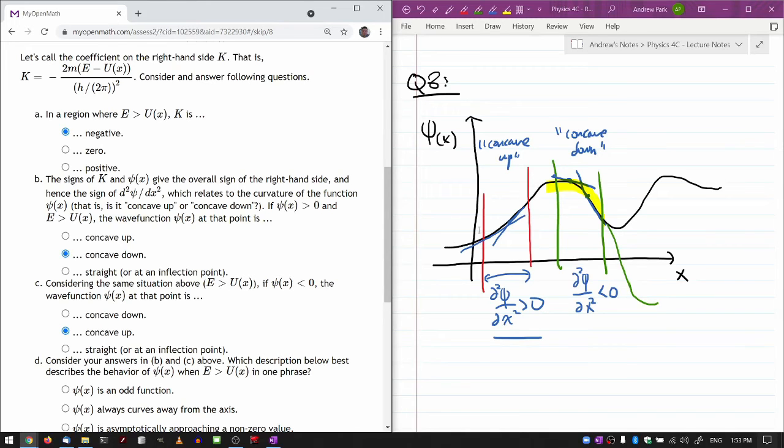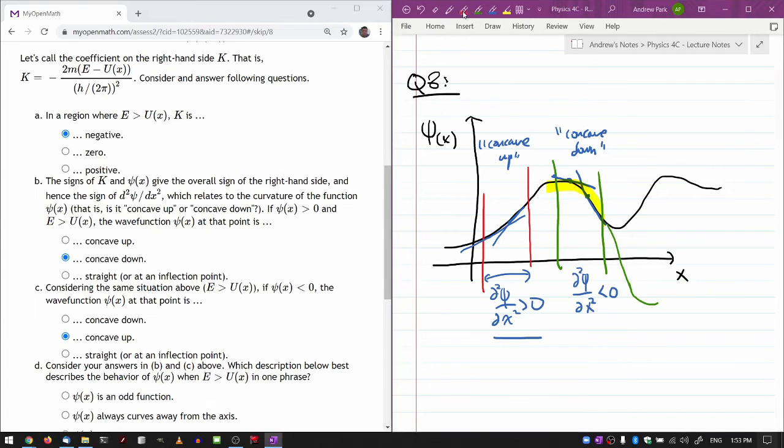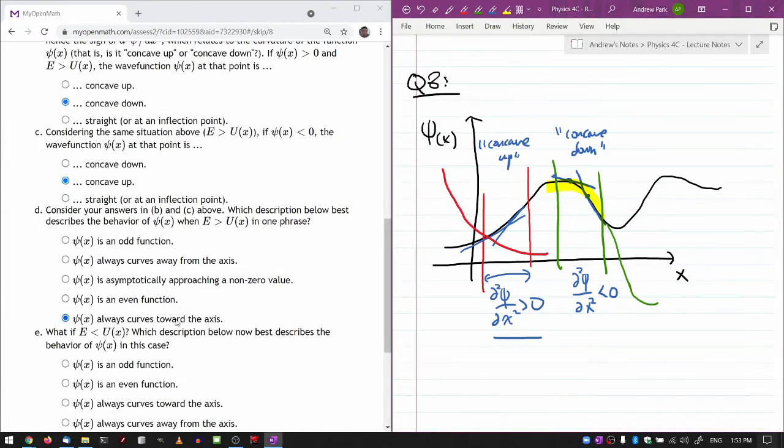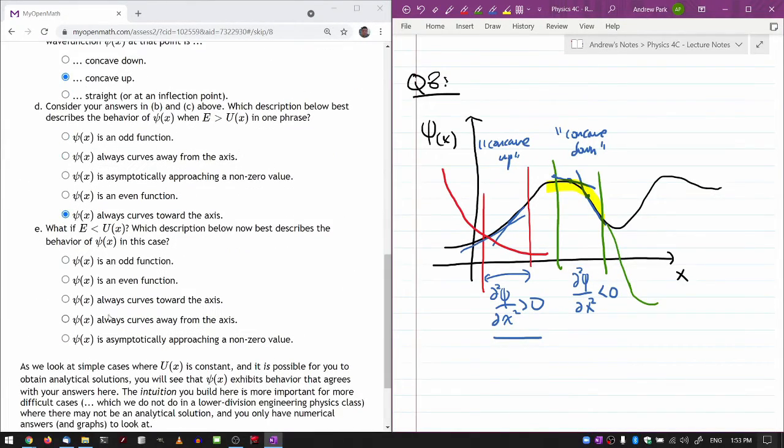But one thing you do have to be careful about is if this behavior continues to x approaching infinity—that gives you an unnormalizable function. The other thing that would work out here that's still concave up but would give you something normalizable would be something that looks like an exponential decay that's concave up and would vanish to zero so that you can normalize it.